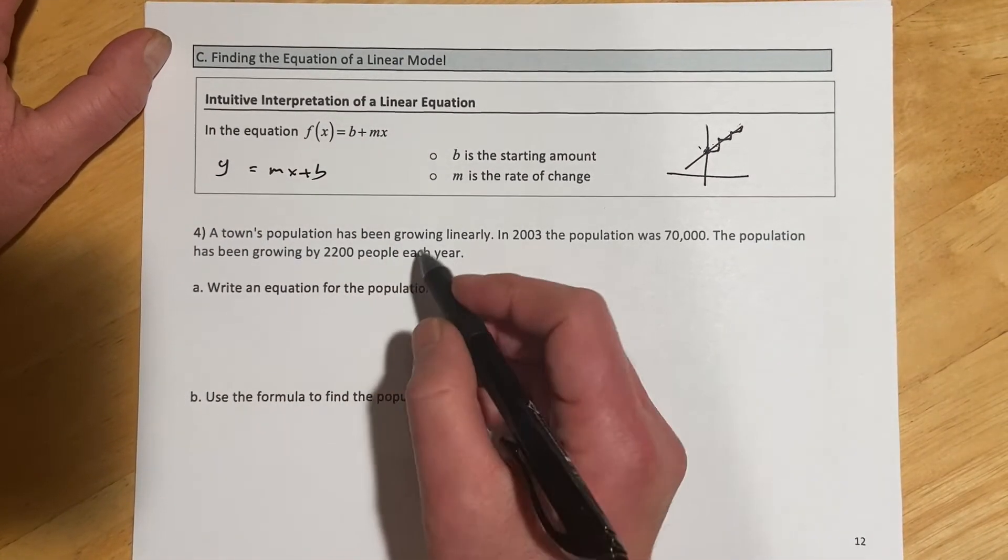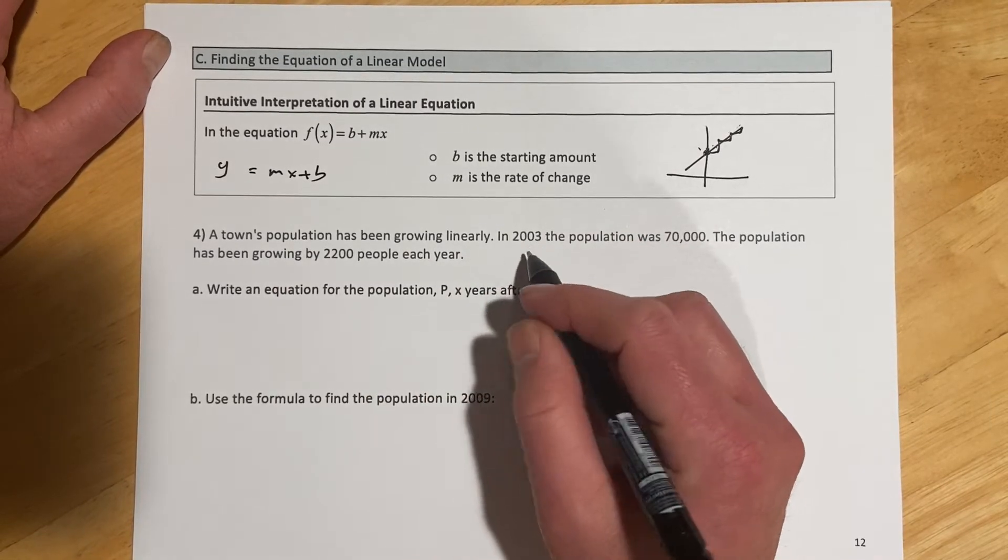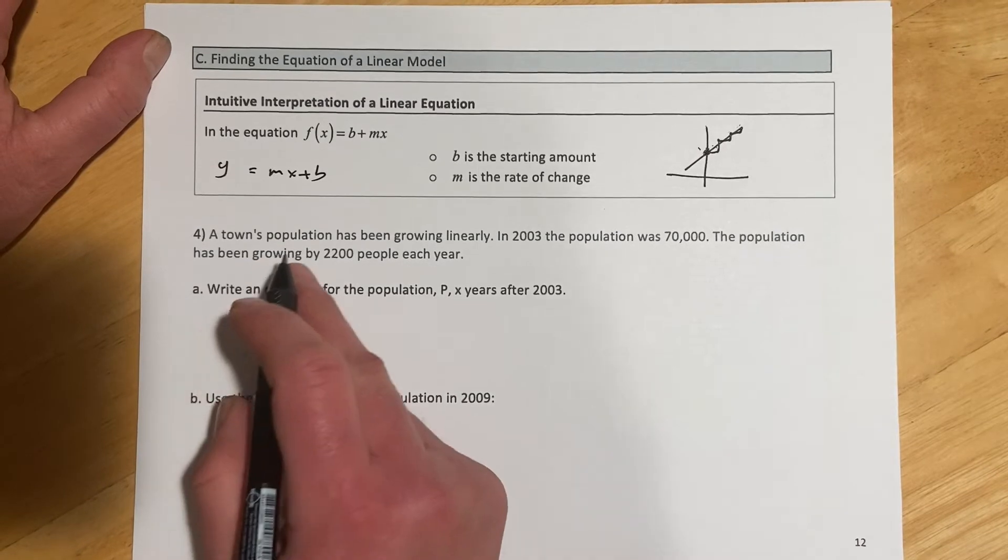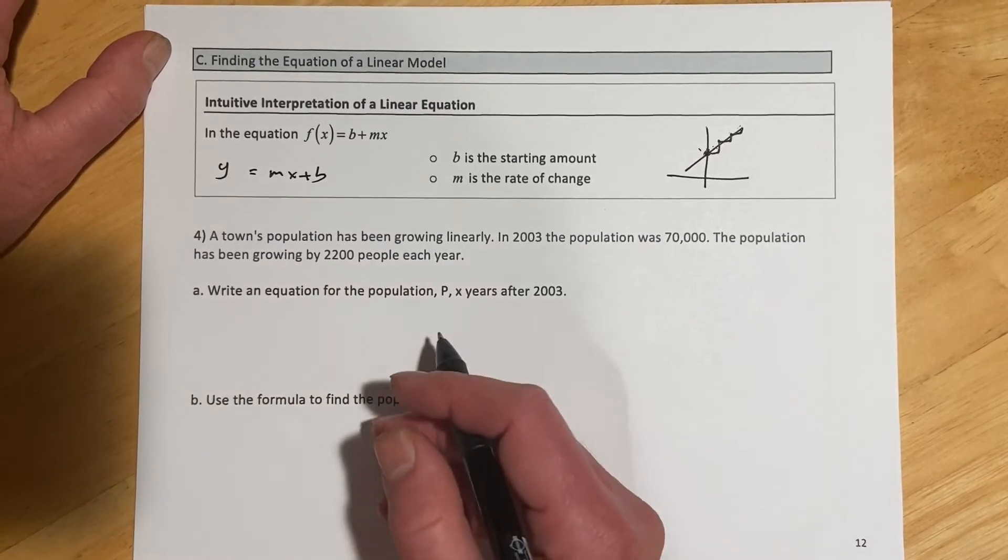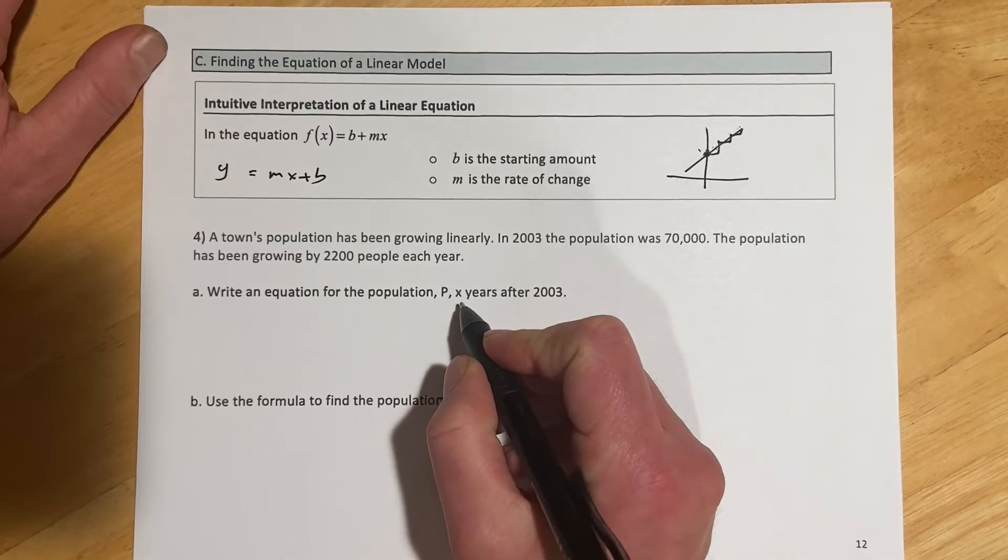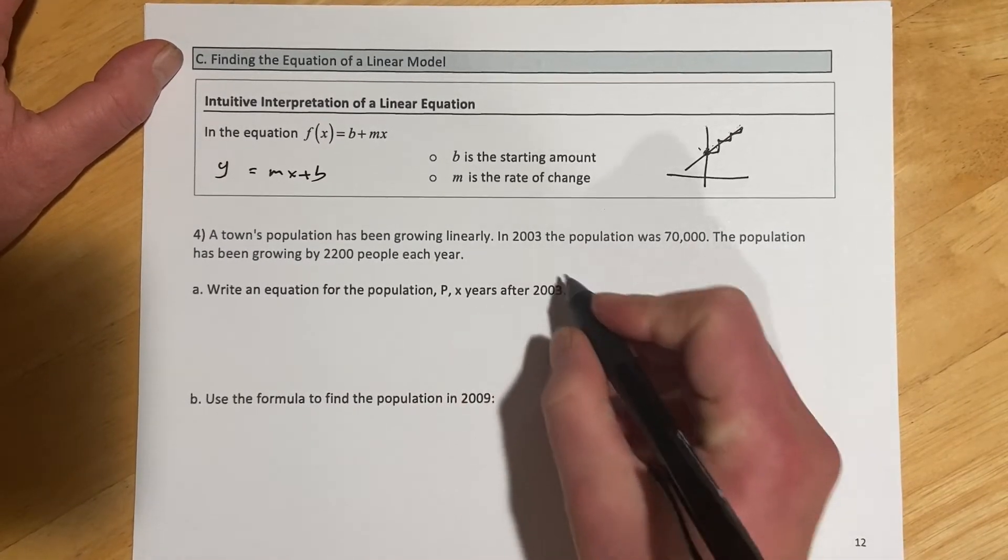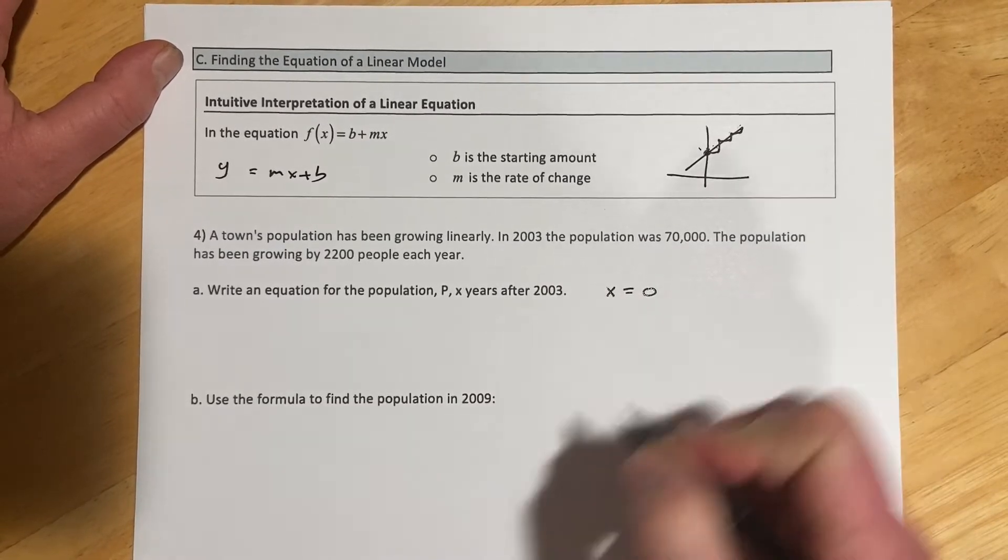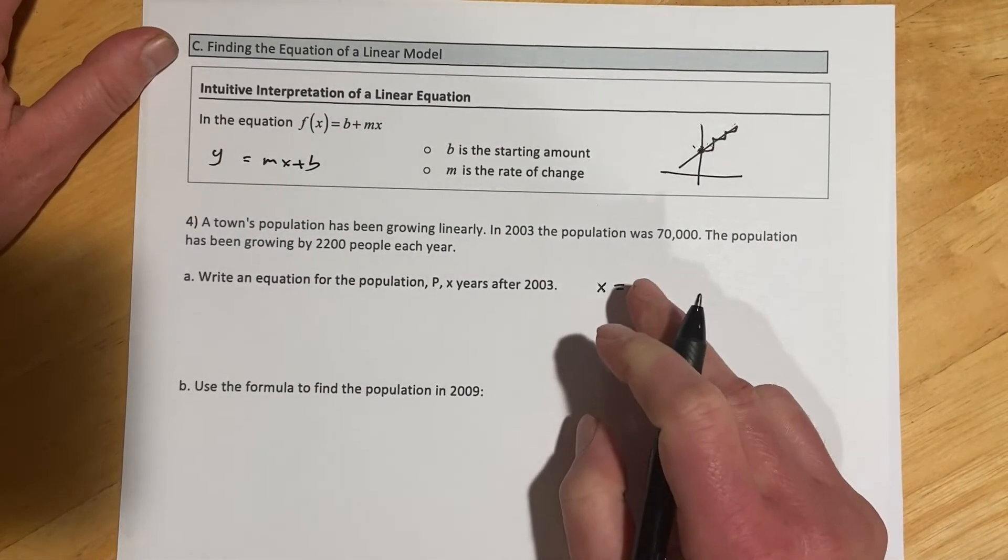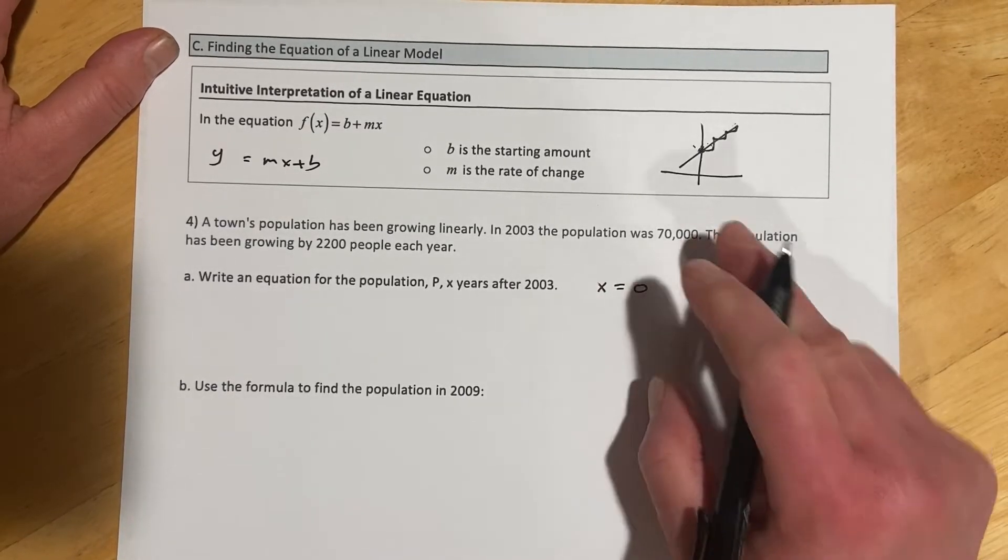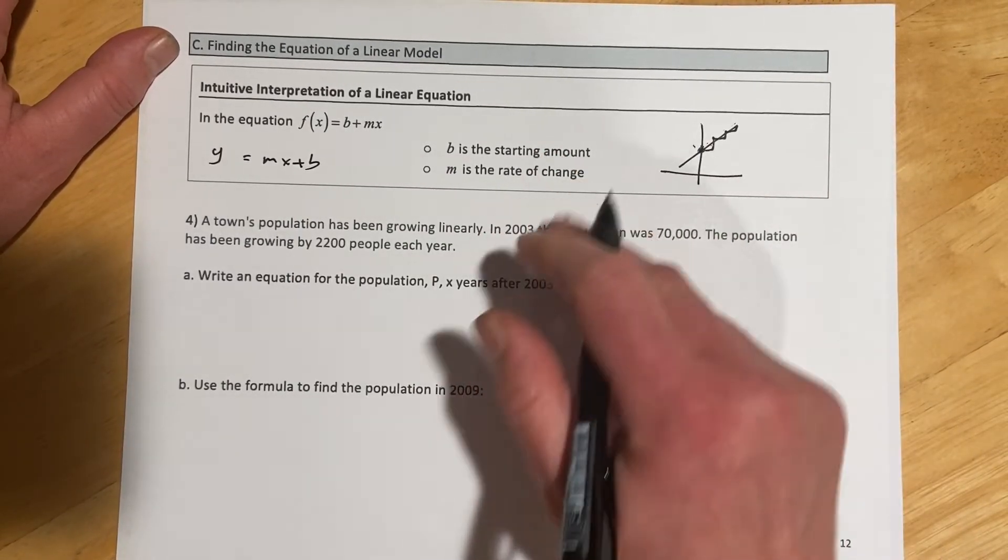So let's see how it looks with an actual problem. A town's population is growing linearly. In 2003, the population was 70,000. The population has been growing by 2,200 people per year. Write an equation for the population p, x years after 2003. So we're letting 2003 be x equals 0. So at time 0, then the population is 70,000.